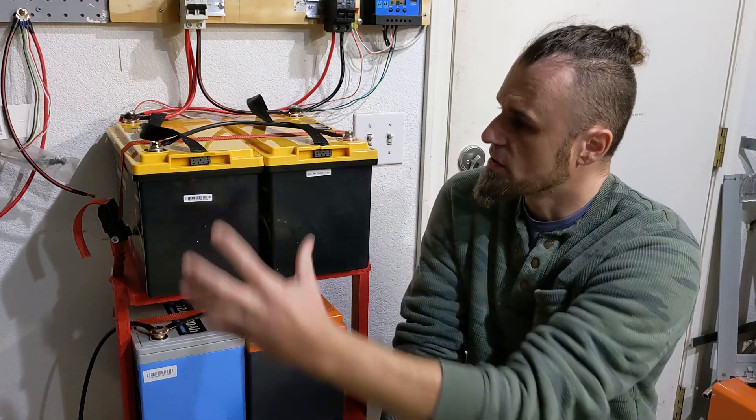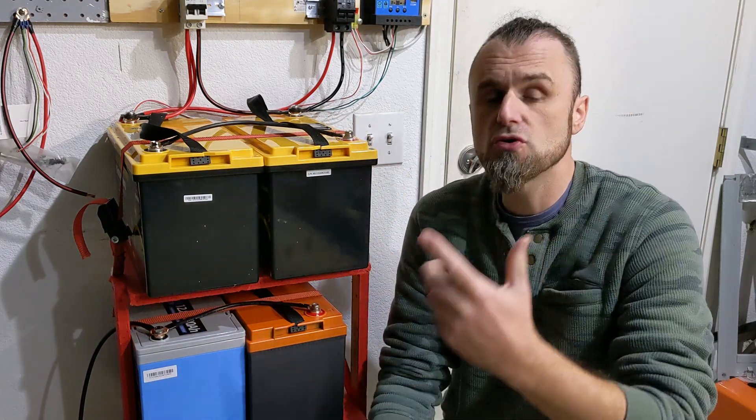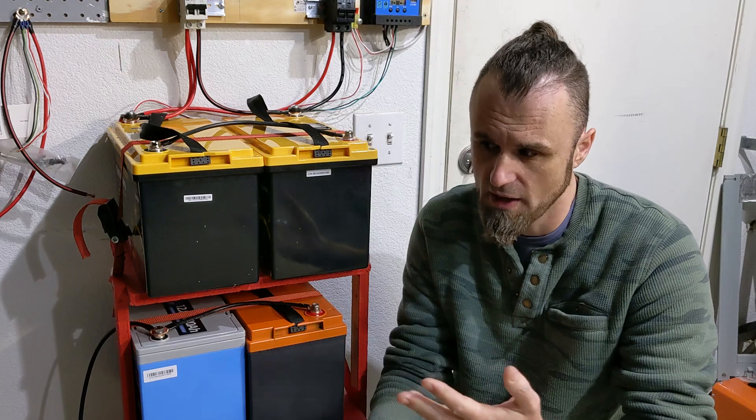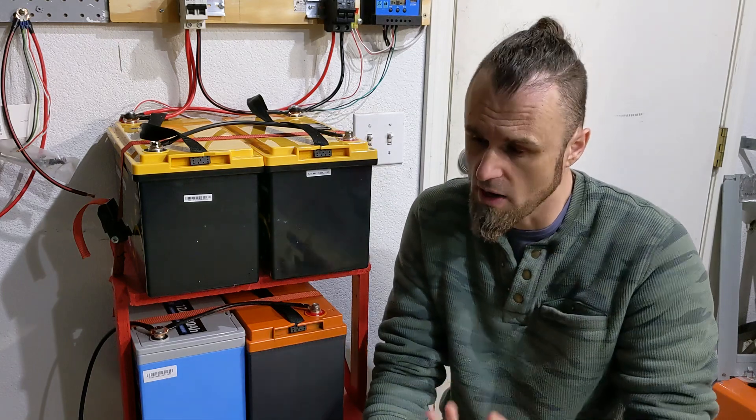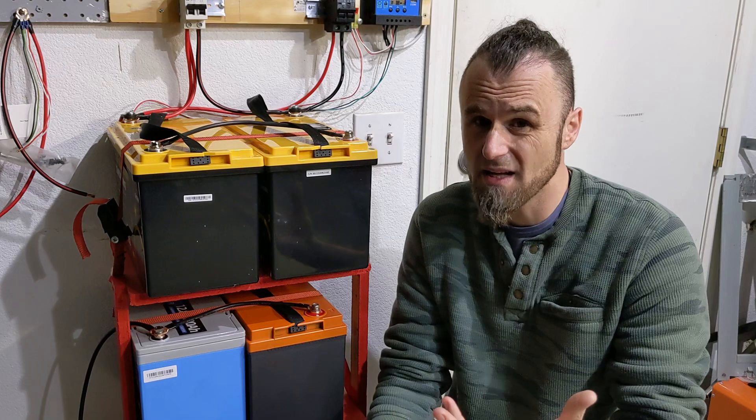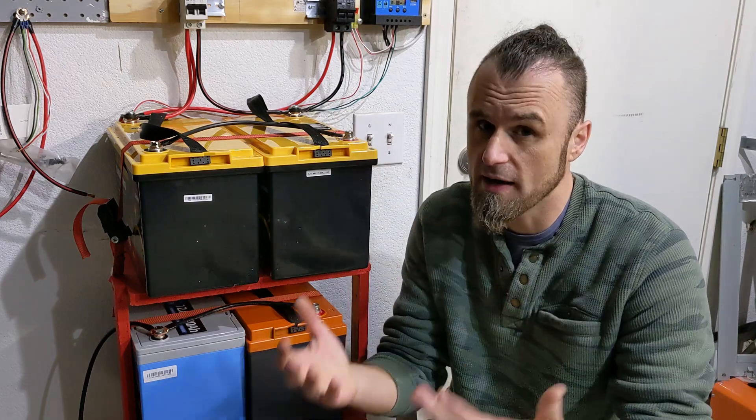When you choose your solar system and you choose to have a 48 volt, 24 volt, 36 volt, or 12 volt, it's important to start right. Ideally, if you know all that stuff, then you will be able to plan accordingly.